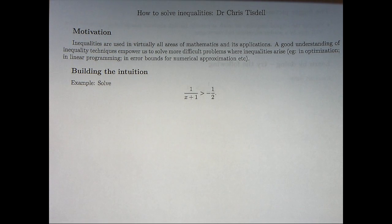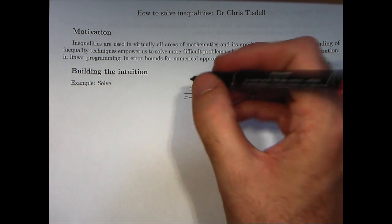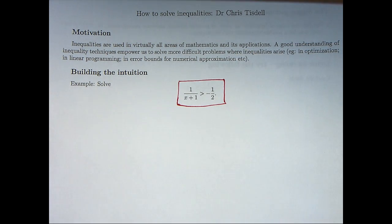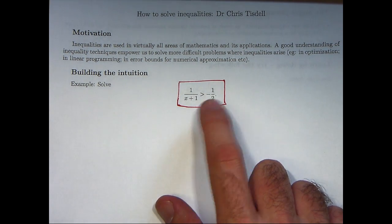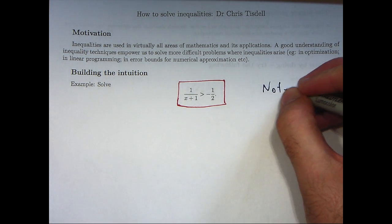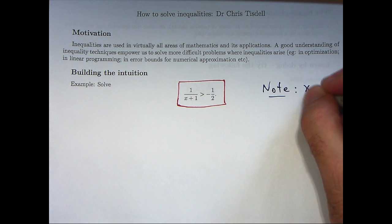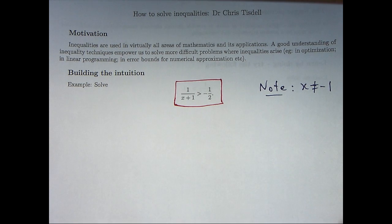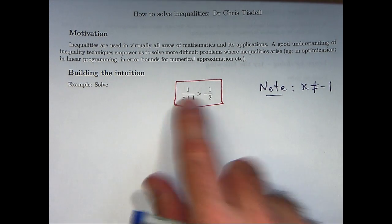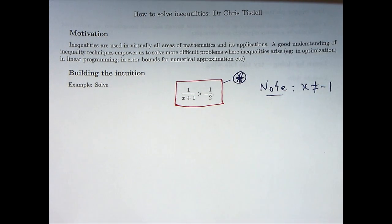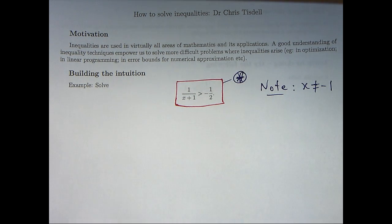But let's just do a simple example first off and build our intuition a little bit. So, here's the problem. We're asked to solve this inequality for x. Now, the first thing we note is that we exclude the point x equals minus 1 because we're dividing by 0. Now, I'm going to label this inequality as star.